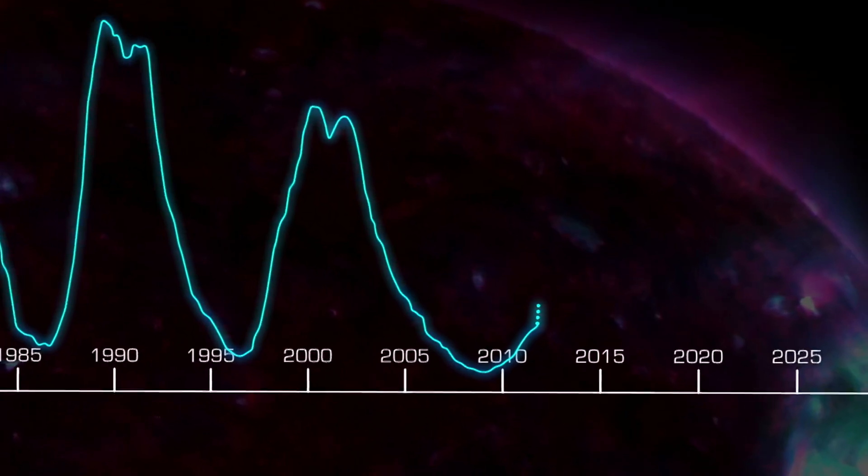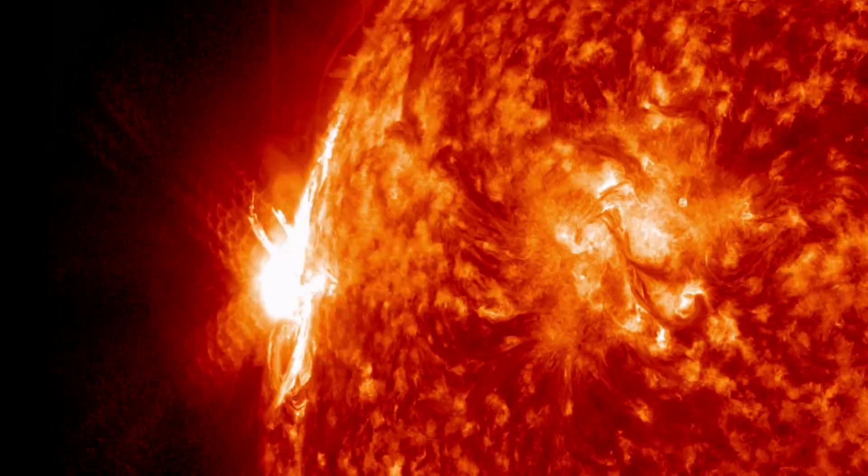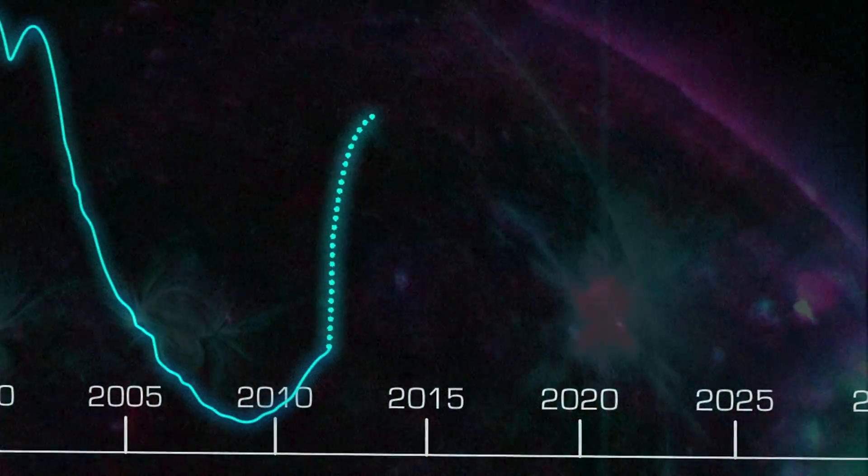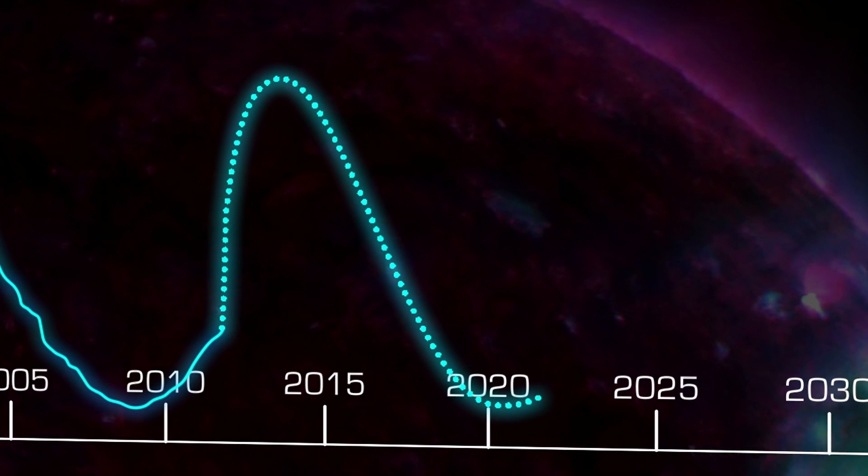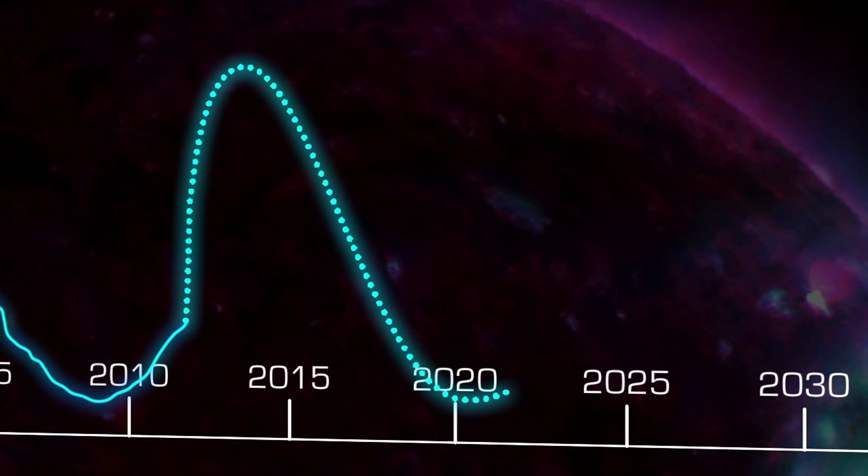Right now, the Sun is approaching solar maximum, so flares and CMEs are more common than they were a few years ago. This cycle may peak in 2013 or early 2014, and should reach its minimum around 2020, although predictions about the Sun are still uncertain.